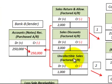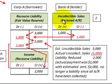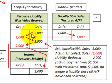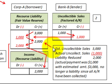For uncollectible sales, the actual amount experienced was only $1,000, while $3,000 had been estimated. The recourse liability was originally $3,000, but only $1,000 was actually paid to Bank B. This leaves a $2,000 remaining balance in the recourse liability, which no longer exists since all accounts receivable have been collected. So the liability is reduced by $2,000.